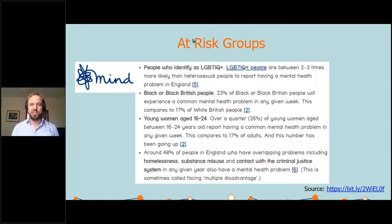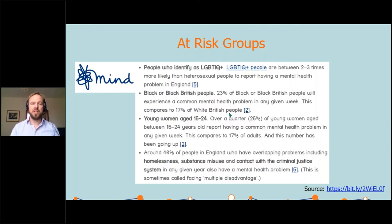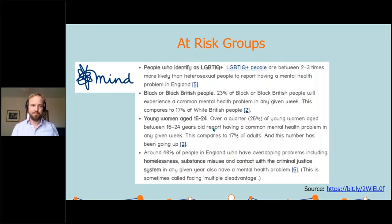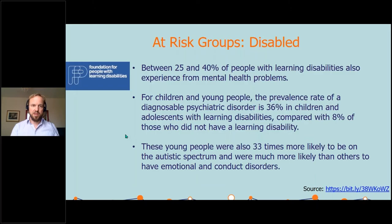Black or Black British people — 23% are experiencing a common mental health problem in any given week, compared to 17% of white British people. Also, the LGBTIQ community is at much higher rates again for mental health problems. As we highlighted, young women aged 16 to 24 are particularly at risk. And there are also overlapping problems with homelessness, substance misuse, and contact with the criminal justice system.